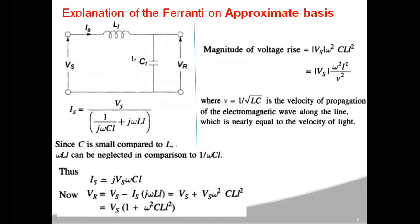Another method: if the Ferranti effect is observed in a medium transmission line, you can use the nominal pi method. But before that, let us explain the Ferranti effect on an approximate basis with some assumptions. Consider a transmission line equivalent circuit — the transmission line will have series impedance, series inductance, and shunt capacitance.